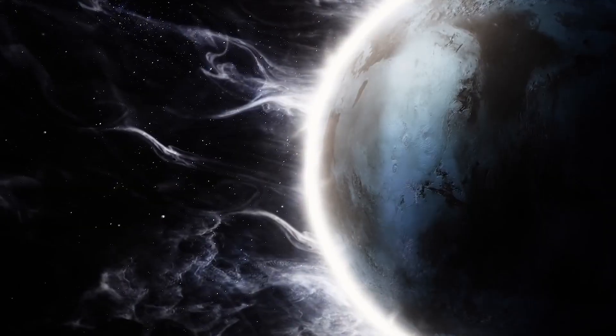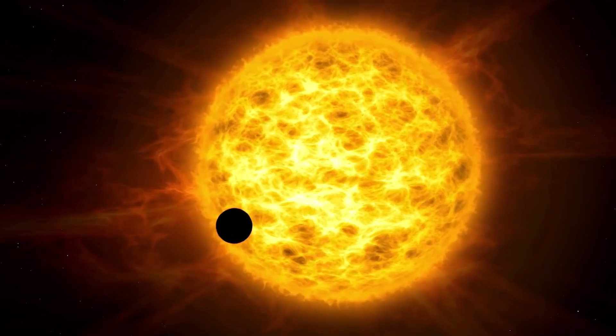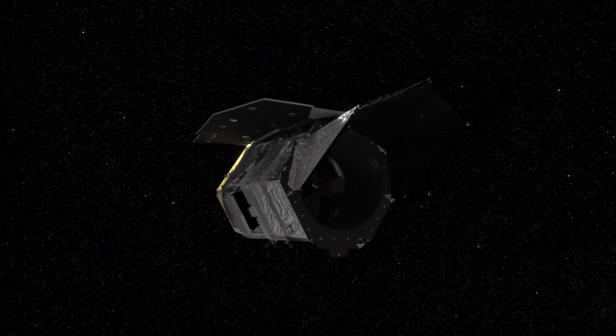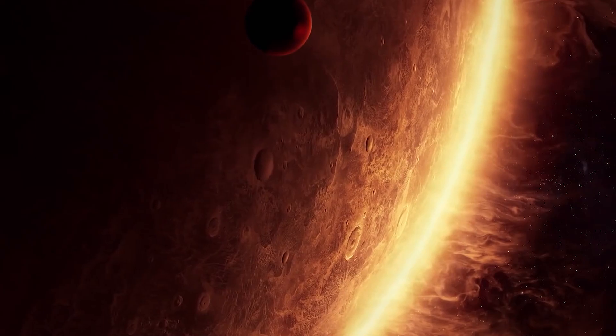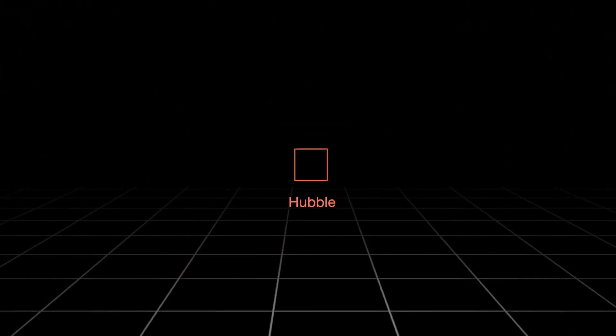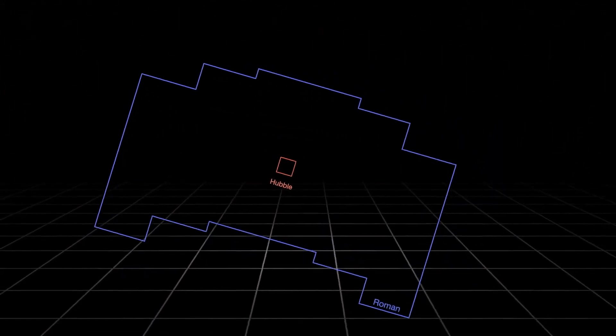On the other hand, exoplanets are planets orbiting other stars outside our solar system. For this purpose, it will undertake a galactic exoplanet survey. The wide-angle lens will help Roman map the Milky Way and other galaxies 100 times faster than Hubble.